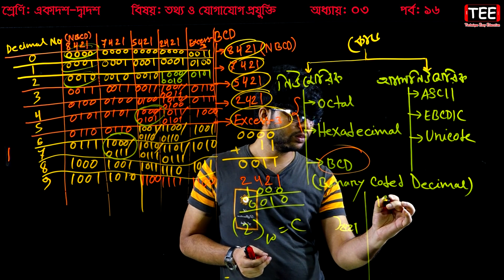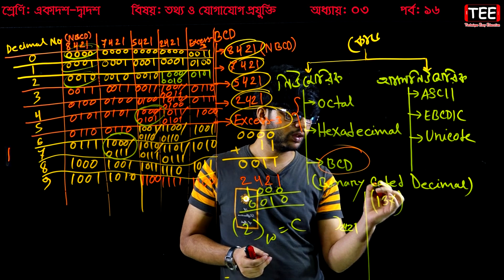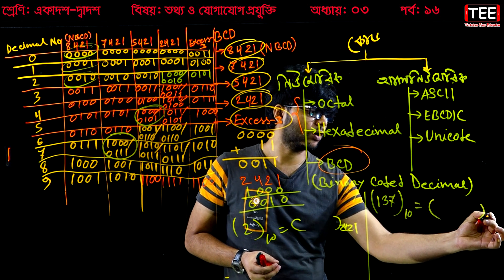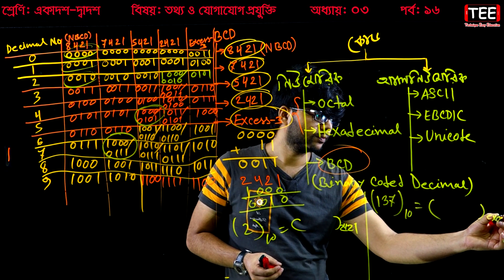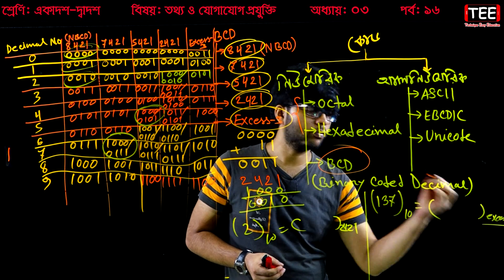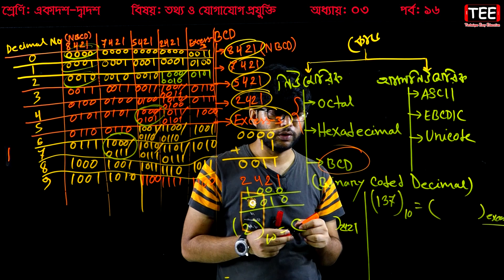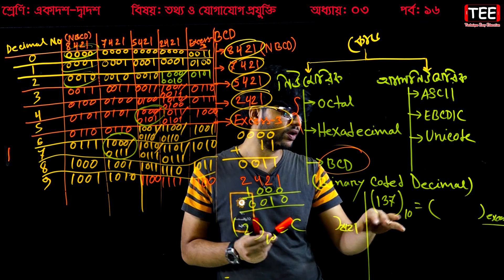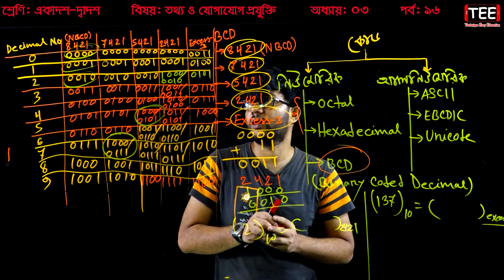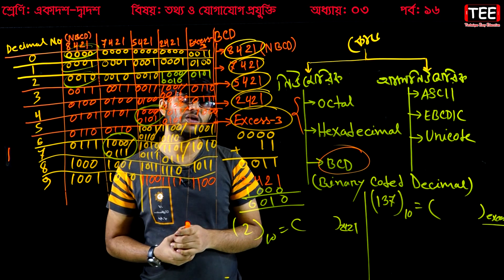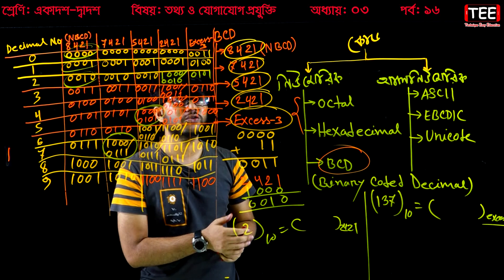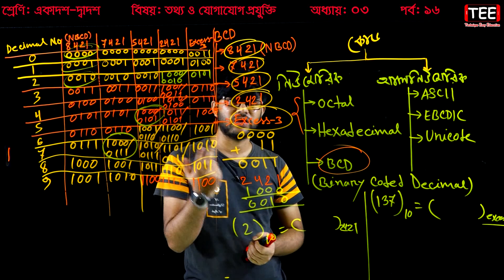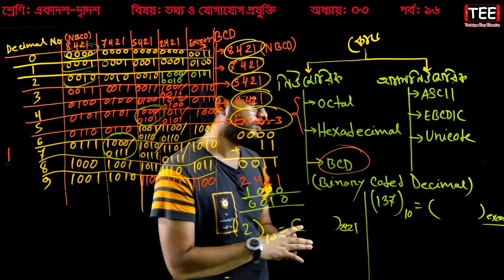If you want to convert 137 decimal to XS3 code, you already know the XS3 code, right? If you want to comment on this video, we will be talking about it. Today we will be talking about the next video — the BCD edition. Okay, Allah peace.